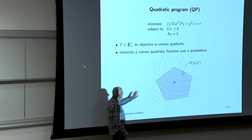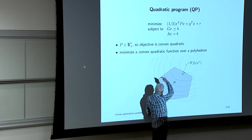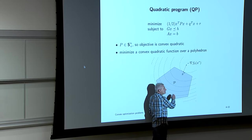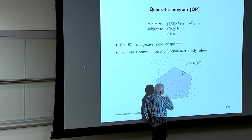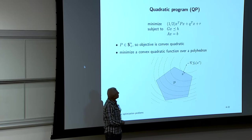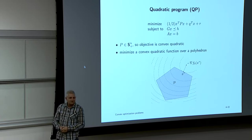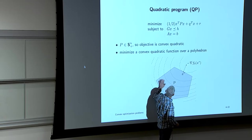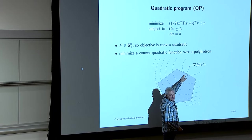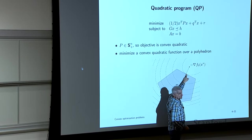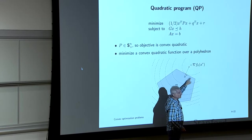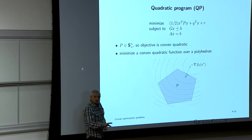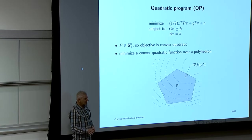The picture: you want to go downhill to the minimum while staying in the feasible region. At the optimum, the negative gradient — pointing toward the unconstrained minimum — is an outward normal of the feasible set. If that weren't the case, you could wiggle x and do better.